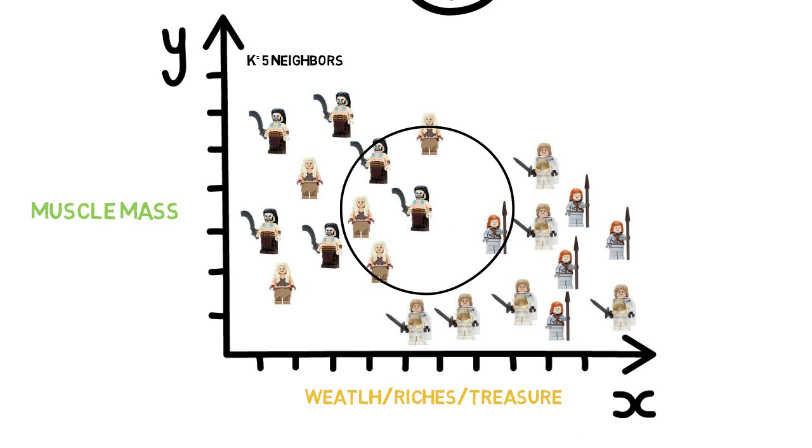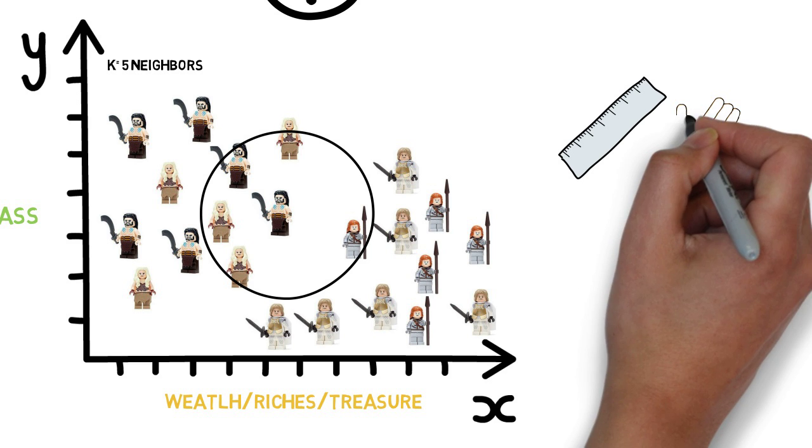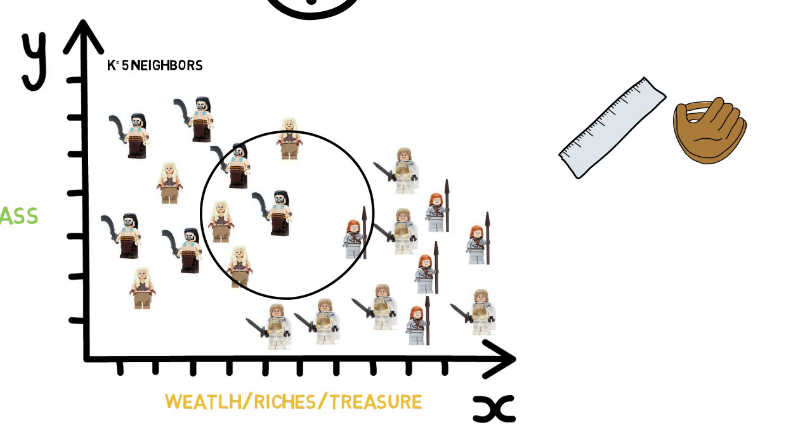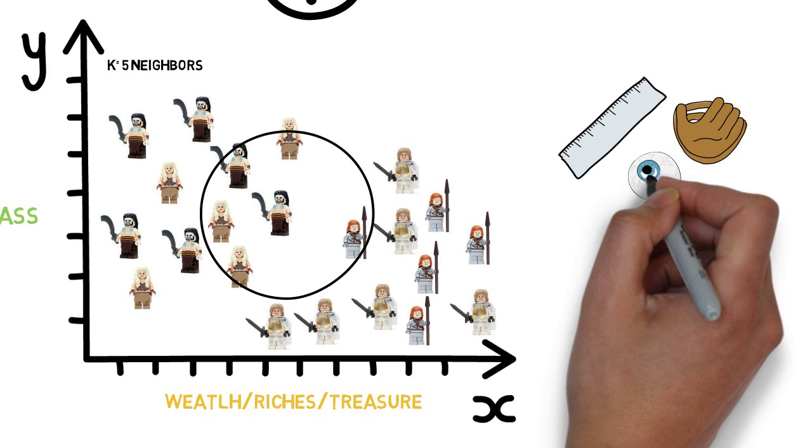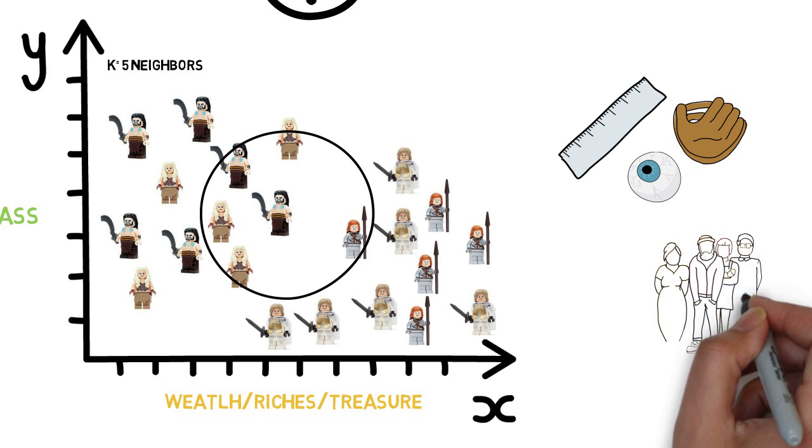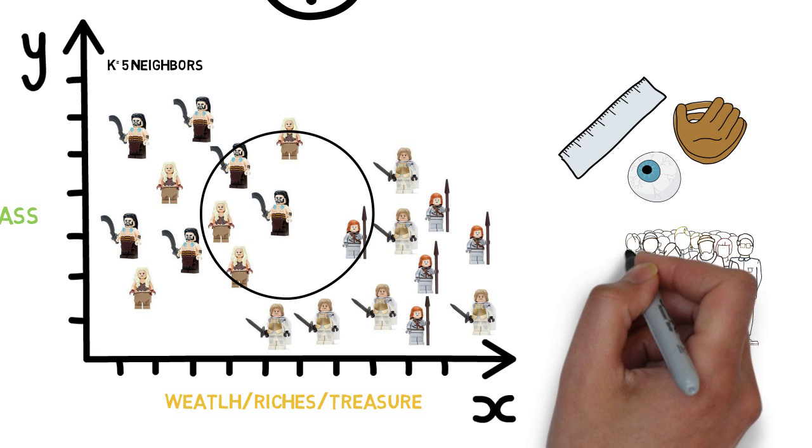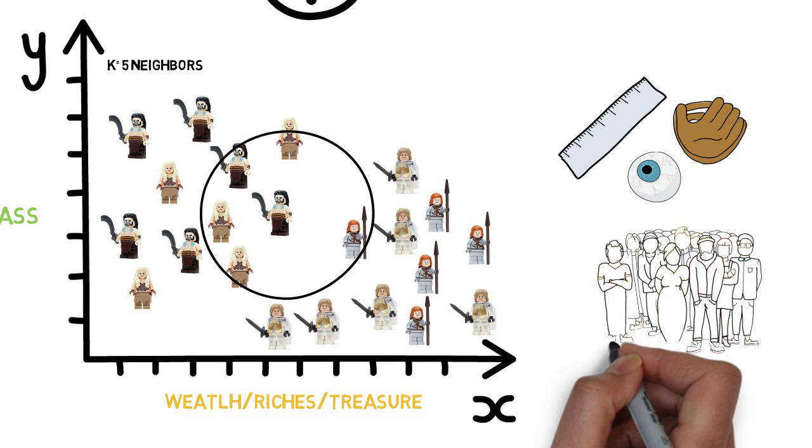Now we don't need to use muscle mass or wealth. We can use other features such as height, waist, skin and hair pigmentation, eye color amongst others. So the crux of the algorithm is to ask who are my neighbors and what class do they belong to and how many of those neighbors of a particular class are closest to me, and I will be the same class as the majority in my proximity.